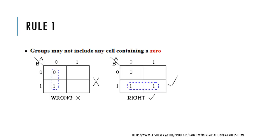Rule number one says that groups may not include any cell containing zero. As you can see in this two-variable Karnaugh map, this blue line shows a group where one cell has a one and the other has a zero. We cannot form a group like this. We have to form groups where both cells contain a one — only groups of ones will be considered.